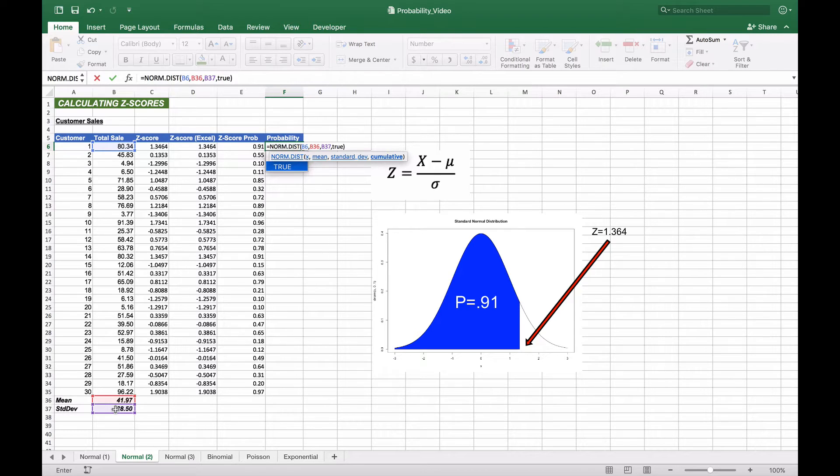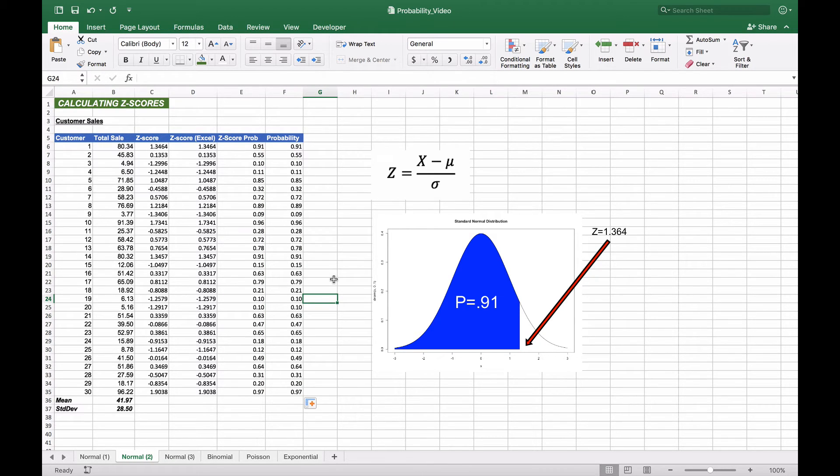And if this is correct, we should have the exact same probability of 0.91, which we do. In order to use this for everything else, we'll need to anchor the 36 and we'll need to anchor the 37 so that we can then copy this formula all the way down, and we'll see that our probability measures are identical.